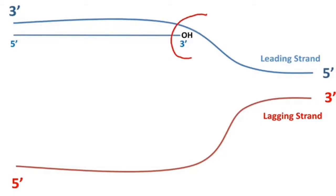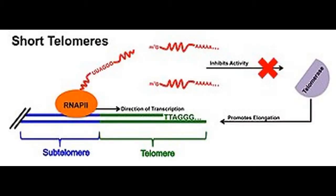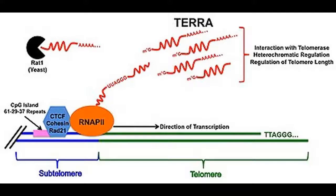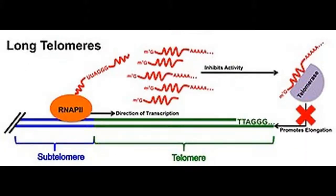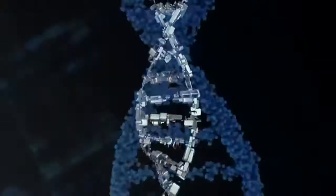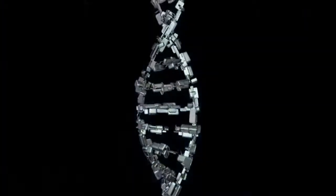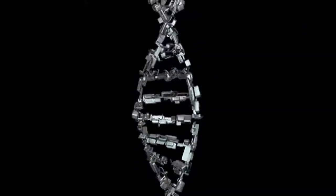While TERRA has not been shown to be an essential or permanent component of telomere chromatin, it is believed that TERRA's primary function is to transiently maintain the structural integrity at telomeres, either through direct interaction with telomeric DNA or by the binding of associated telomeric proteins.